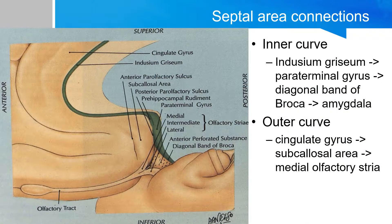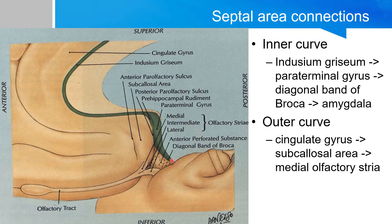In general, you can think of the connections to and from the septal area in two curves. In the inner curve, you can find a structure just above the corpus callosum called the indusium griseum, and this structure merges with the paraterminal gyrus. The paraterminal gyrus in turn extends to the inferior surface of the brain, joining with another structure called the diagonal band of Broca, which eventually leads into the amygdala.